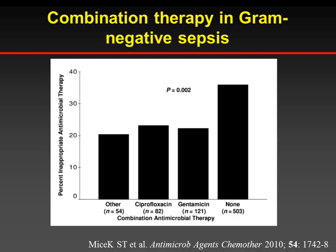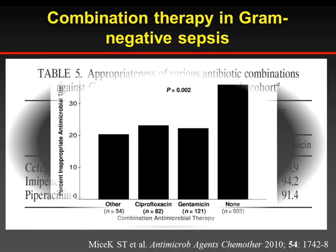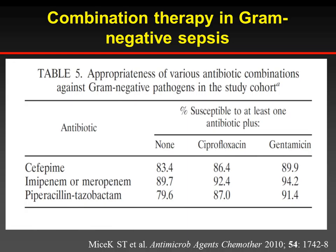This paper published three years ago studied the combination of a backbone beta-lactam plus quinolone or aminoglycoside, examining the percentage of inappropriate treatment. When you combine cefepime, carbapenem, or pip-tazo with cipro or an aminoglycoside, you have a lower proportion of patients with inappropriate treatment. When you combine with an aminoglycoside, you gain around 10% in susceptibility — for example, pip-tazo alone has 80% susceptibility against gram-negatives, and adding an aminoglycoside provides that additional 10% gain.